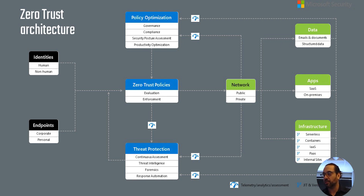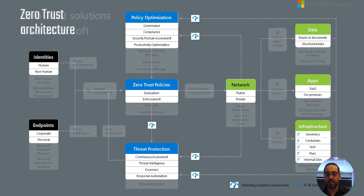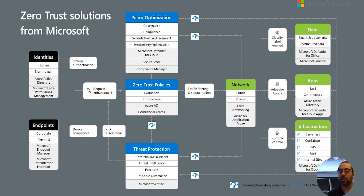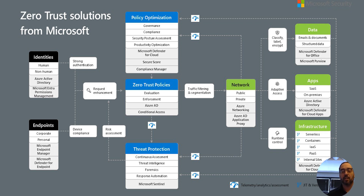Zero trust policies can use signals including user role, location, device compliance, data sensitivity, application sensitivity, and much more. Risk assessment feeds into the policy engine to respond to threats in real time. Policy is enforced at the time of access and is continuously evaluated throughout the session. The Microsoft tools we'll be working with and demoing include Entra Permissions Management, Azure Active Directory, Endpoint Manager, Defender for Cloud, Conditional Access, and MFA — putting them together in a configuration that builds a zero trust architecture.